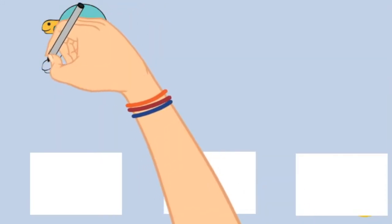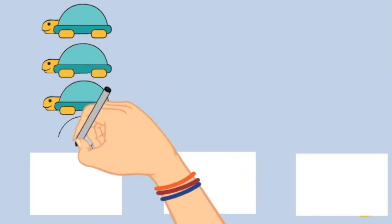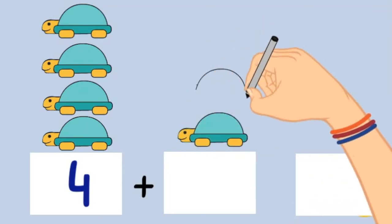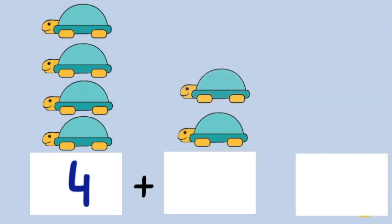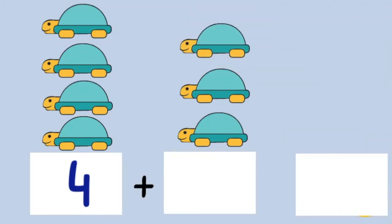One, two, three, four. Plus one, two, three. Four plus three equals seven.